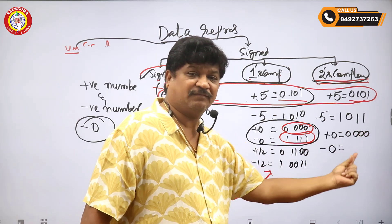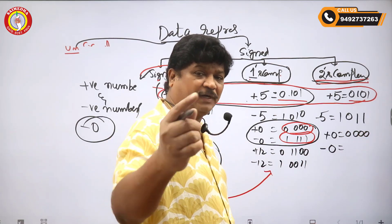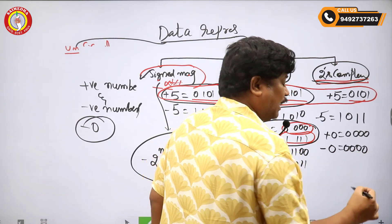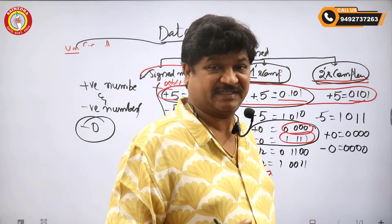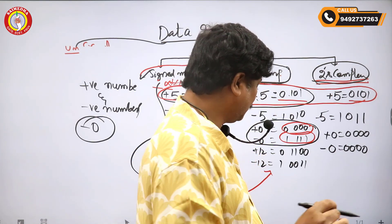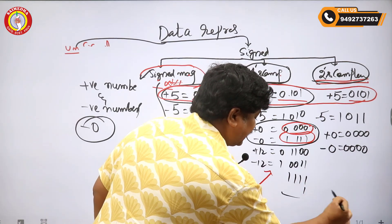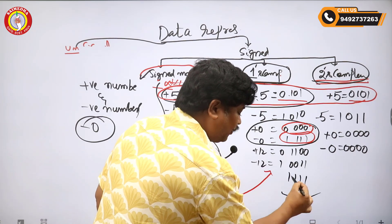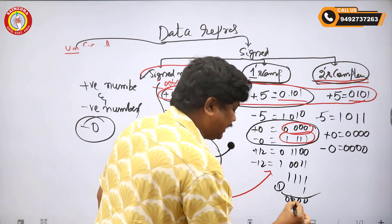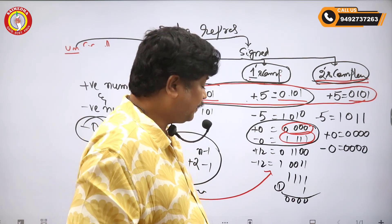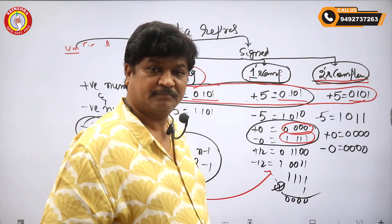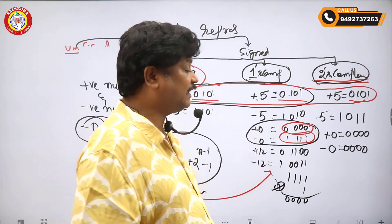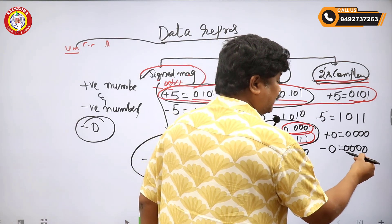The one's complement of 0000 is 1111. Adding one to that: 1+1=0, 1+1=0, 1+1=0, 1+1=0, and you get a carry. But in two's complement representation, the carry is discarded. So the result is 0000.